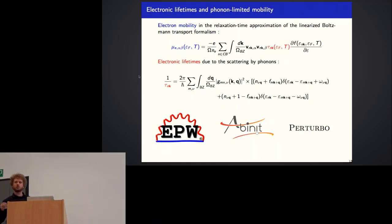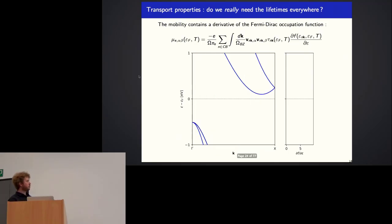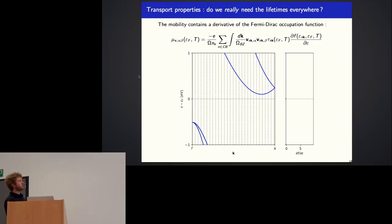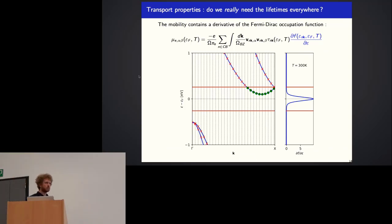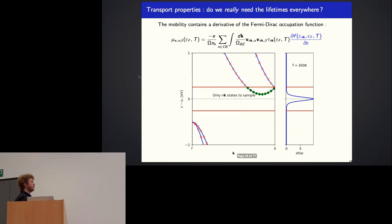Now that we have confidence in the lifetimes computed with Abinit, we can use them to compute the mobility. Looking at silicon, with the band structure zoomed in near the conduction band minimum along the Γ-X segment, we would normally use a homogeneous sampling: computing velocities and lifetimes on all sampled states. However, the derivative of the Fermi-Dirac function is non-zero only in a small energy region. Much of the homogeneous sampling is therefore wasted, and we should only consider the states in the region where the Fermi-Dirac derivative is practically non-zero.